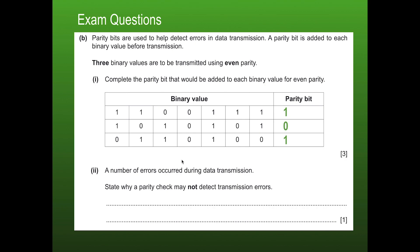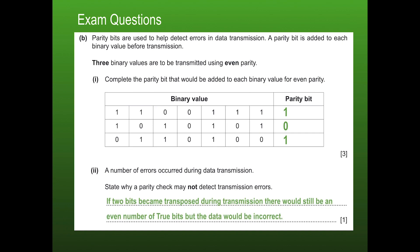State why a parity check may not detect errors in transmission. If two bits become transposed during transmission — swapping places — there would still be an even number of true bits, so the parity check would show no error even though the data is incorrect. The specific location of an error also cannot be identified using a basic parity check.